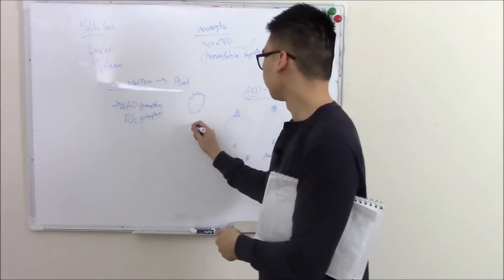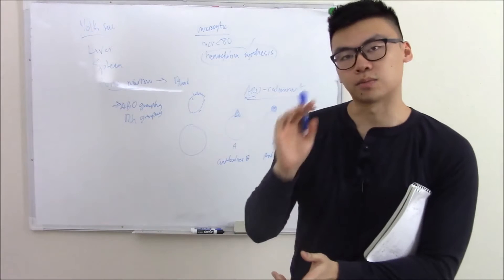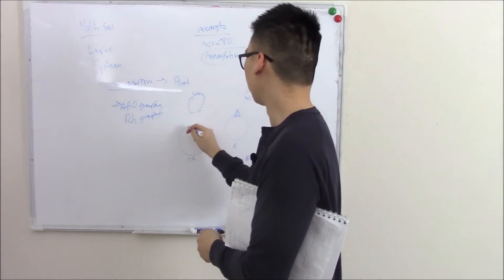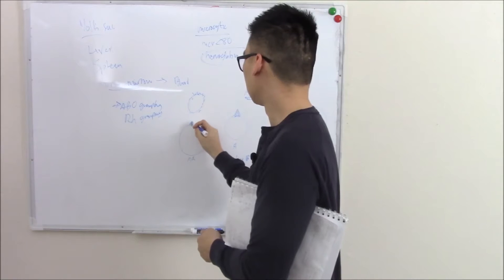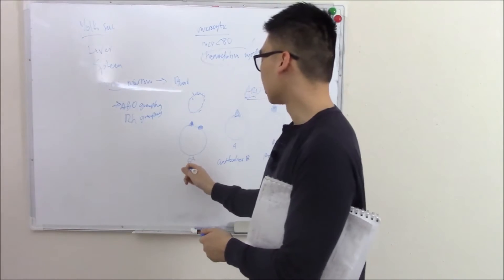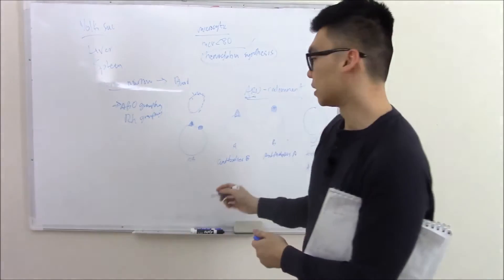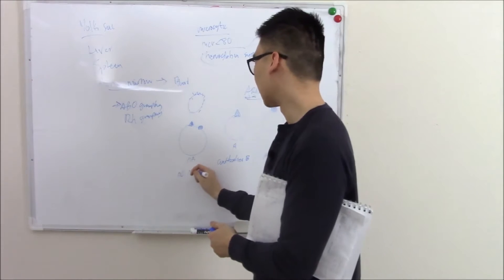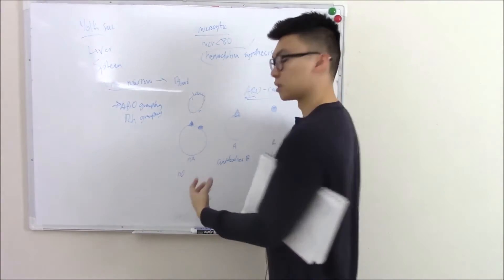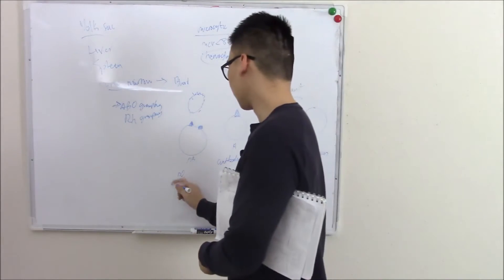Finally, you can have AB blood. Because it's co-dominant, you express both of them — AB blood has both the A antigen and the B antigen. So what antibodies does it make? It can't make anti-A because it has A, and it can't make anti-B because it has B. So you actually have no antibodies against other blood. This is why AB is sometimes called the universal recipient — because it doesn't have any antibodies, it can take any blood.